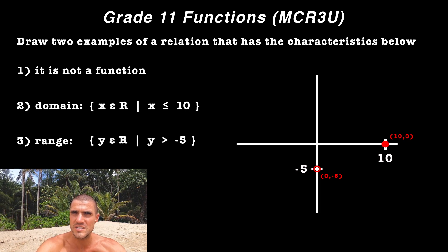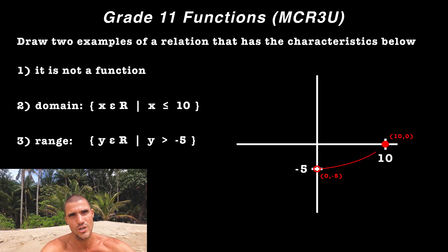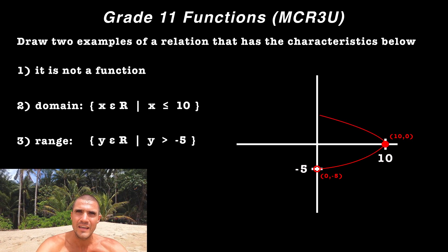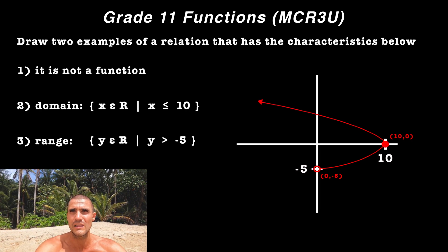And so really what we could do is draw a sideways parabola from that point zero and negative five, that hole zero, negative five, make it attach to the point 10 and zero, and then make it come back and have the arrow go infinitely to the left.